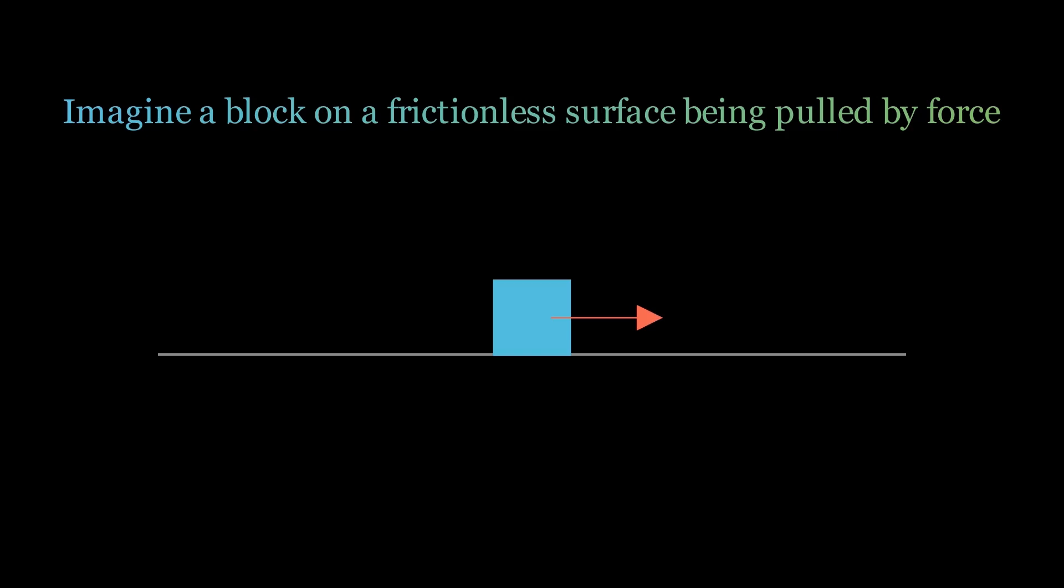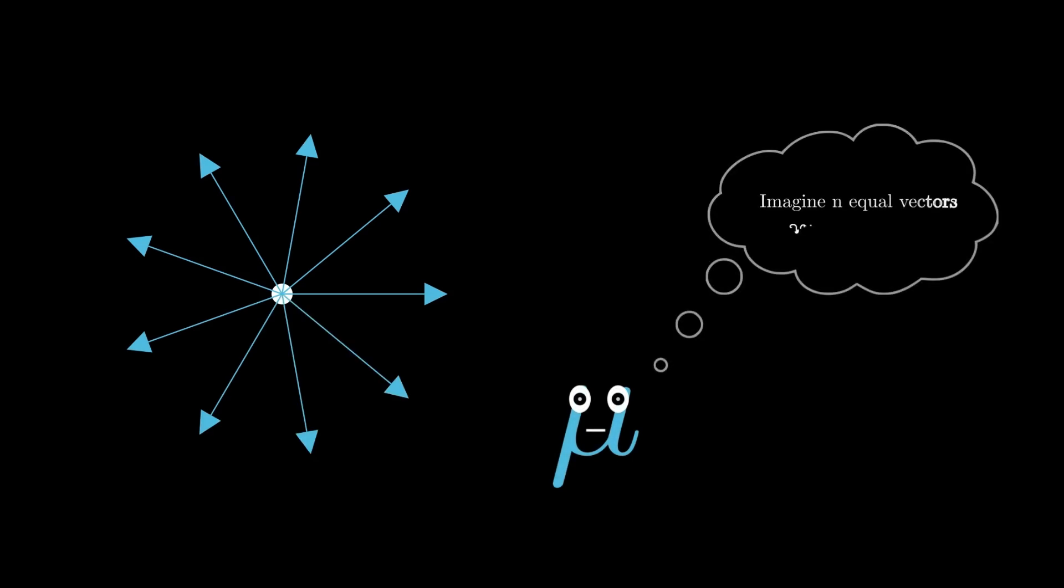Here is the problem that I want to address in this video. Picture this: You have n vectors greater than 1, all of the same magnitude spreading out from a central point and evenly spaced around a circle. Each one makes an angle of 2π over n radians with the next. The big question is, what is the resulting sum of all these vectors?